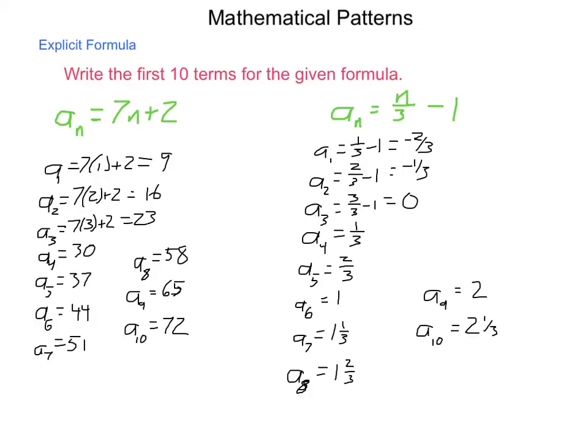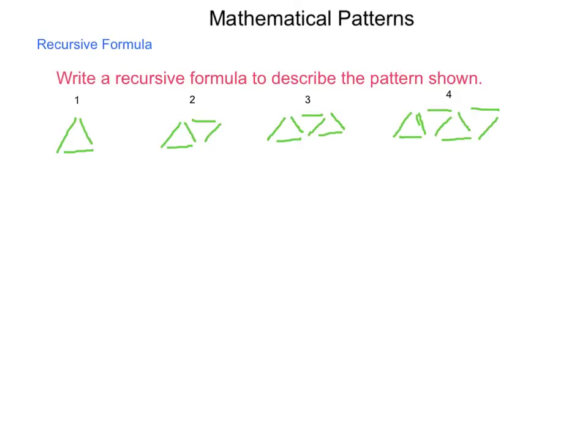Now that we've worked a little with explicit formulas, let's look at some recurrence. Here is a pattern that is built using toothpicks or sticks of building triangles. In our first figure, we have one triangle and it uses three sticks.